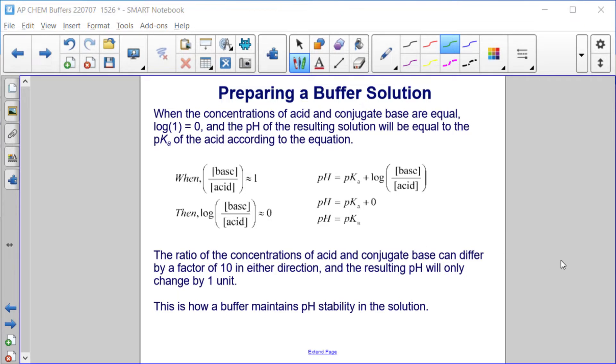The ratio of the concentrations of acid and conjugate base can differ by a factor of 10 in either direction and the resulting pH will only change by one unit. This is how a buffer maintains pH stability in the solution.